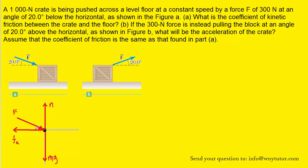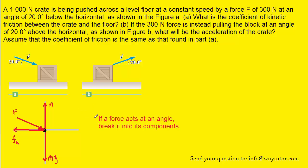And then we have the kinetic frictional force, which is pointing to the left, because it points in the direction opposite to the motion of the block. So if the block is moving to the right, the kinetic frictional force acts against that direction to the left. After drawing the free body diagram, we want to make the following very important point.